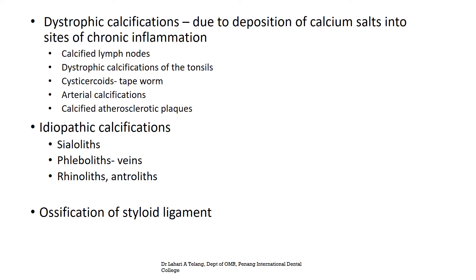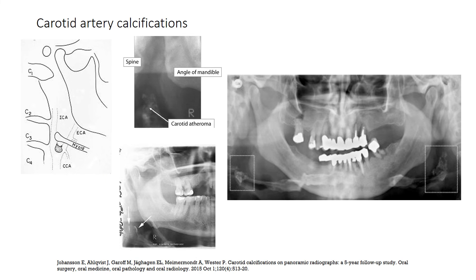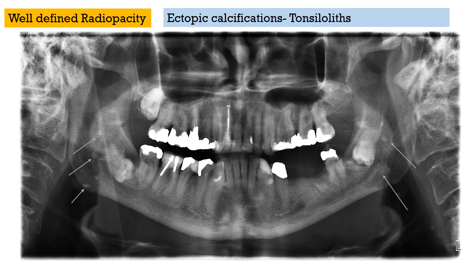Dystrophic calcifications due to deposition of calcium into sites of chronic inflammation can lead to soft tissue calcification. These could be due to calcified lymph nodes, dystrophic calcification of tonsils, cysticercosis caused by tapeworm infection, arterial calcifications, and calcified atherosclerotic plaques. Idiopathic calcifications include sialoliths, phleboliths of the vein, rhinoliths and antroliths, and ossification of the styloid ligament. Shown here are examples of carotid artery calcifications, which can be seen below the angle of the mandible region, superimposing over the hyoid bone bilaterally. Also visible are well-defined radio-opacities on either side due to tonsilloliths or dystrophic calcifications within the tonsils.